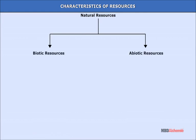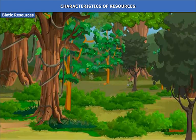Biotic resources are living resources like forests and forest products, agriculture, animals, birds, marine life etc. Abiotic resources are material resources of non-living things. Examples are minerals like iron ore, copper, land resources, soils etc.